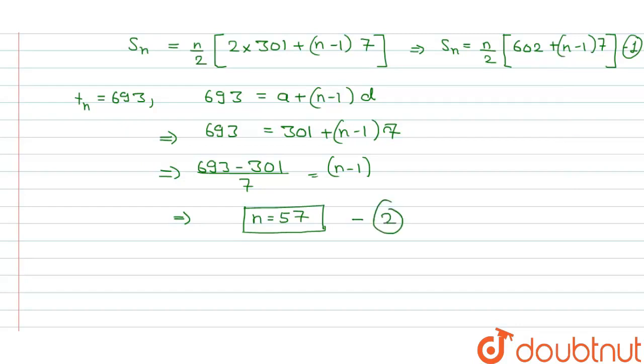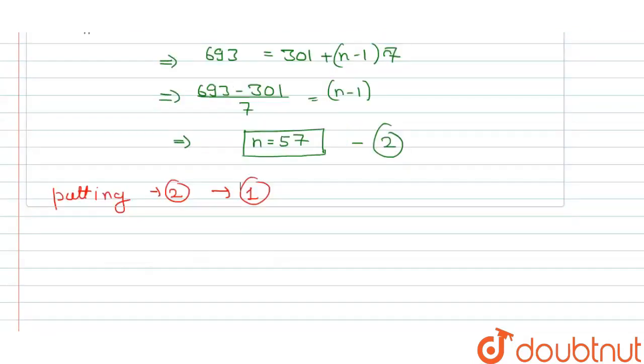In this way we are able to get the value of equation 2. Put equation 2 in equation 1. This is an important step: putting equation 2 into equation 1. How can we proceed? Sn = n/2[602 + (n-1)×7].